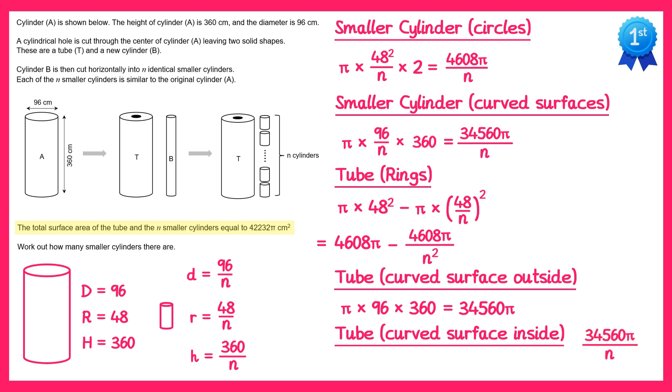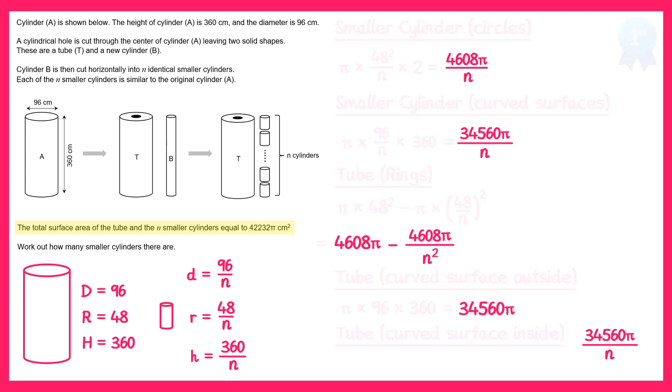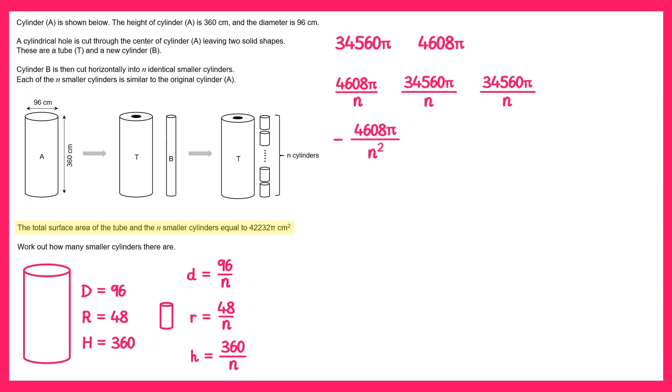So these are all of the surfaces. To get the total surface area we add all of those together. So if we add them together like this, let's add the first two because they're in terms of pi nicely, you get 39,168 pi. The next three terms are all over n, so we get 73,728 pi over n, and then we've got the final term which is over n squared. So we end up with these three terms, that's the total surface area, and we're told in the question that's 42,232 pi.